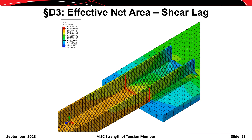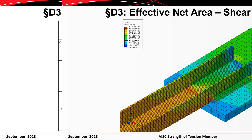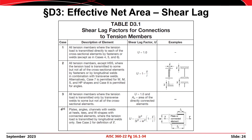Since U is a reduction factor, it ranges between 0 and 1 but is typically in the range of 0.5 to 1.0. Generally, we look up the value of U in Table D3.1 of the AISC specification. This table spans two pages and includes a number of different cases that apply to different connection configurations.